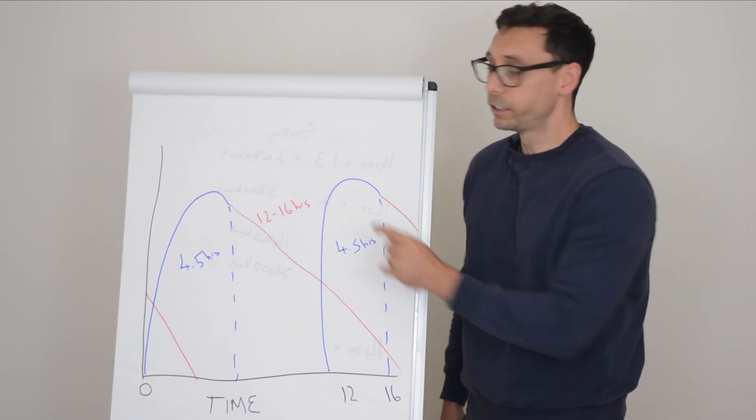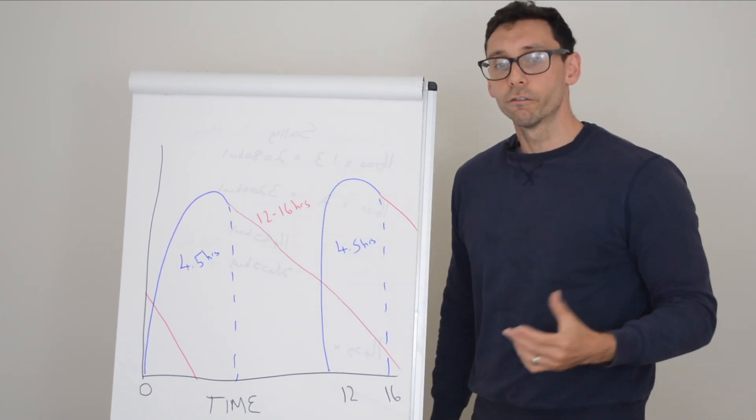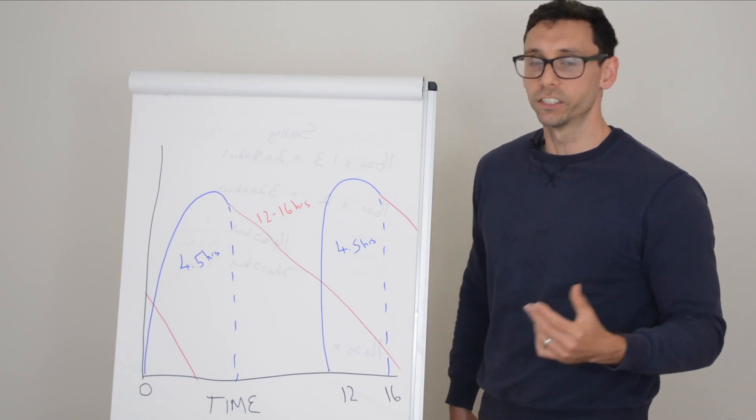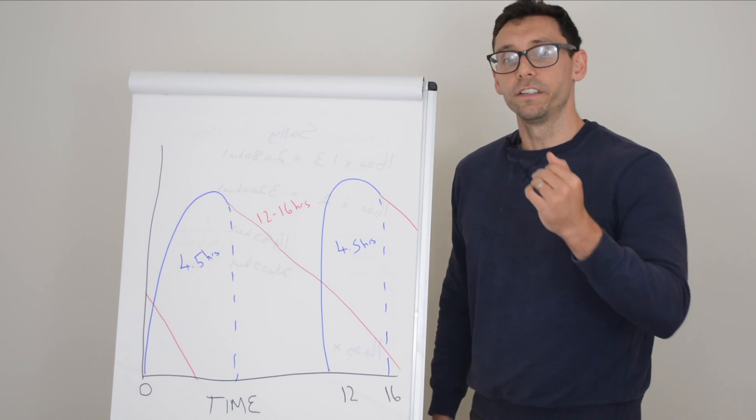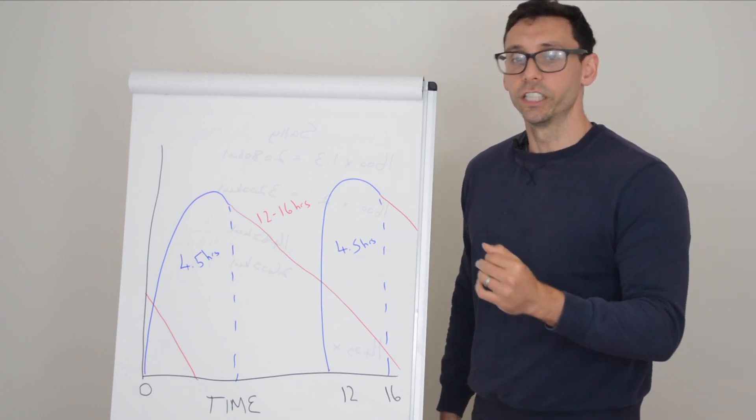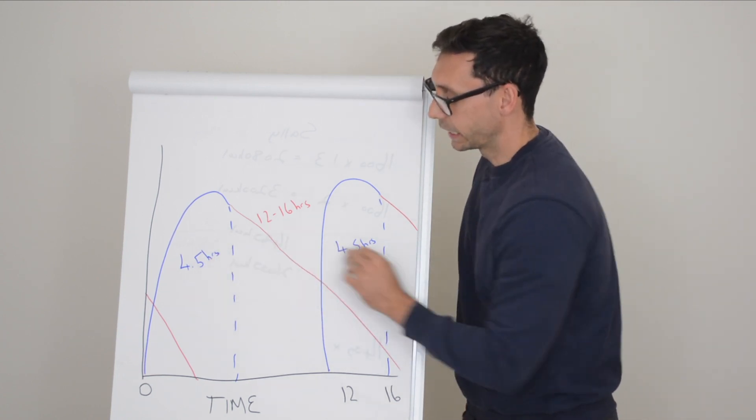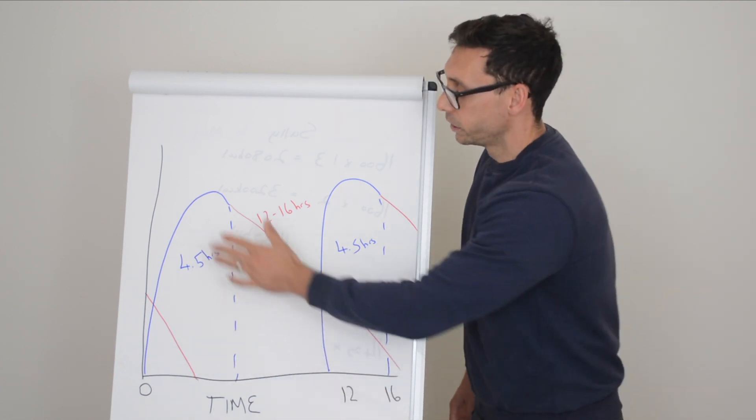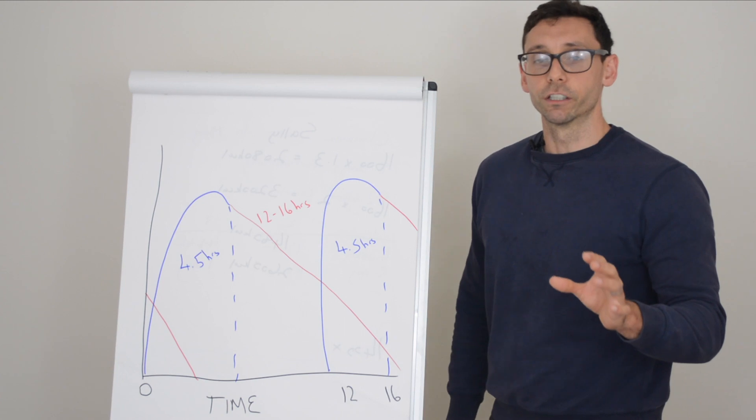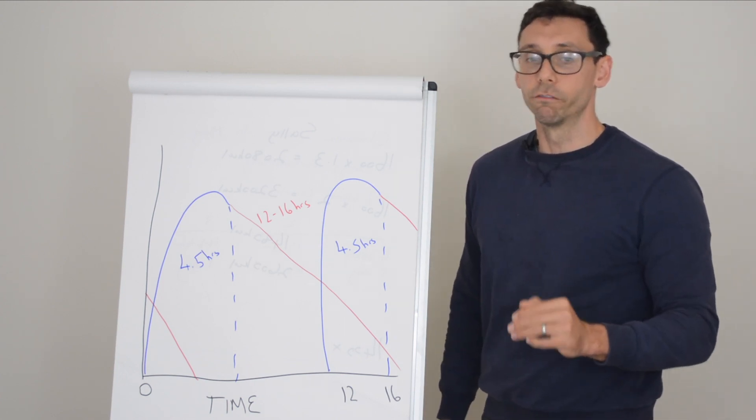But if you decide to go on a health kick or change your diet for whatever reason, these insulins might not be fit for purpose. Remember, they're only there for the carbohydrate containing foods in your diet, particularly this rapid acting element. So if you change your breakfast from say cereal to an omelet, suddenly you're going to be at a very high risk of hypo—low blood glucose levels.